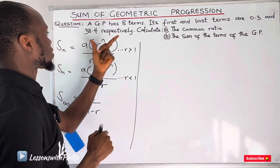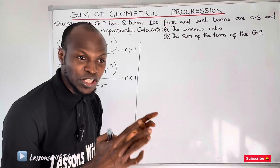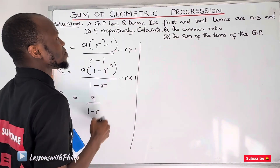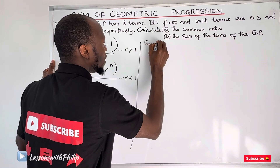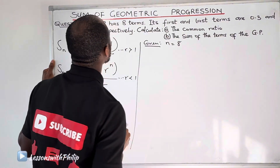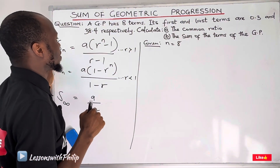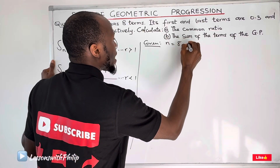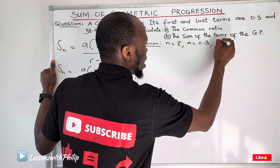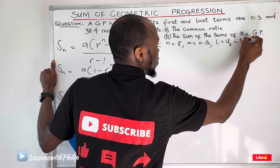For the example we have, it is not an infinite sequence because we are told that the GP has 8 terms, so we can count the number of terms. That means we use either the first or the second formula. We are told the GP has 8 terms, so N equals 8. The first and last terms are 0.3 and 38.4 respectively, meaning my first term is 0.3 and my 8th term is 38.4.